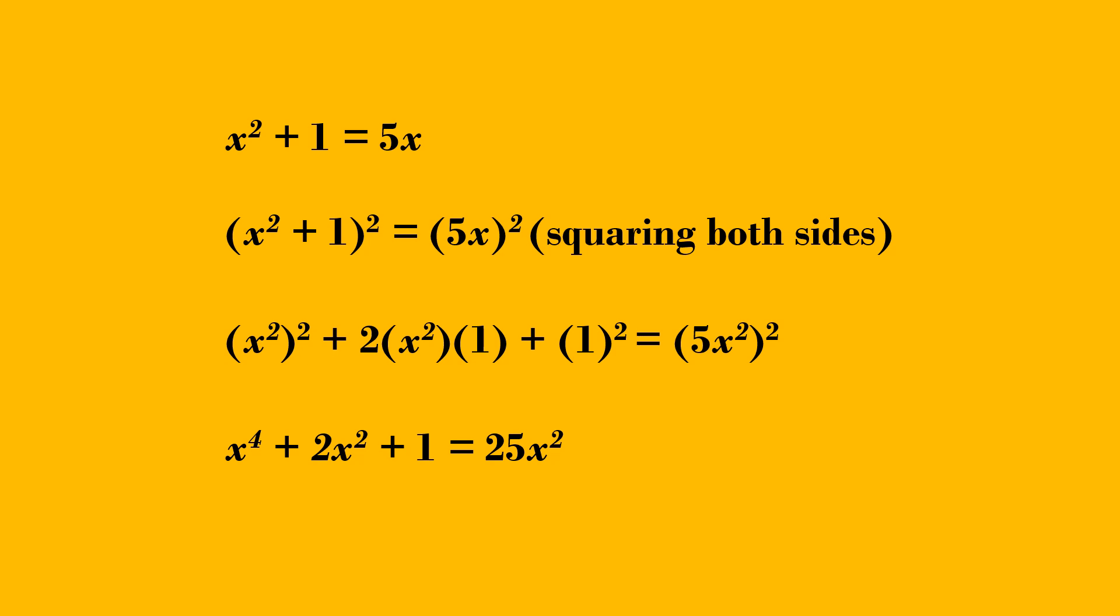So we got x square plus 1 equal to 5x. Now square both sides.